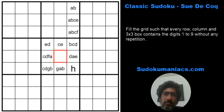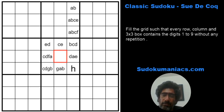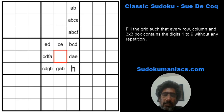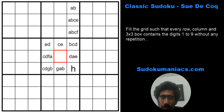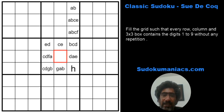While I was thinking of what to select, I came across — or rather remembered — this beautiful technique which is very hard to identify, to be very honest. But if you are able to do that, you can eliminate multiple digits simultaneously across a row or a box. This technique is known as Sue De Coq.